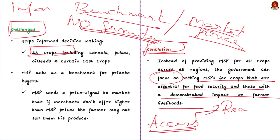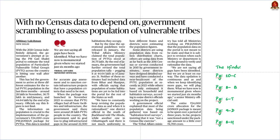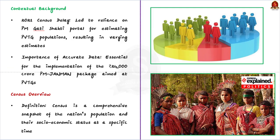That's all about MSP. Now look at this article — the 2021 census delay has led the government to use the PM Gati Shakti portal for estimating the population of Particularly Vulnerable Tribal Groups (PVTGs). Three varying estimates of PVTG population have emerged, and the final population figure remains uncertain. Accurate population data is essential for implementing the government's ₹24,000 crore PM JANMAN package aimed at benefiting PVTGs. So what is a census? Census is a detailed picture of every person living in the country at a specific point of time.